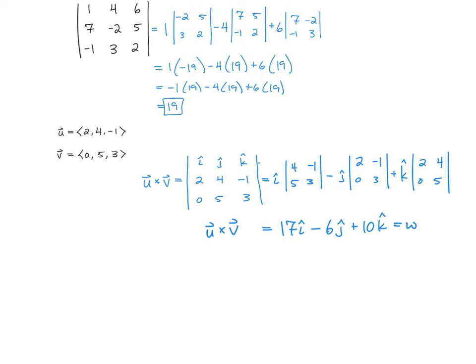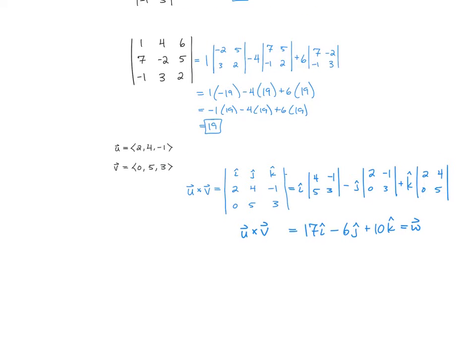So that is u cross v. We can call that w. So that's how you calculate it, u cross v, we're going to call w. The important part of that is that if you do u dot w, you should get 0. If you do v dot w, you should get 0.